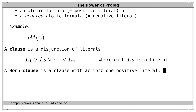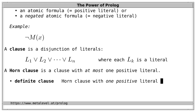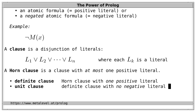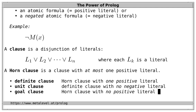There can be either no or one positive literal and zero or more negative literals. Depending on this, we call a Horn clause a definite clause — a Horn clause with exactly one positive literal — or a unit clause, a special case of a definite clause with no negative literal. So a unit clause is a Horn clause comprised of a single positive literal. Or a goal clause, which is a Horn clause with no positive literal.